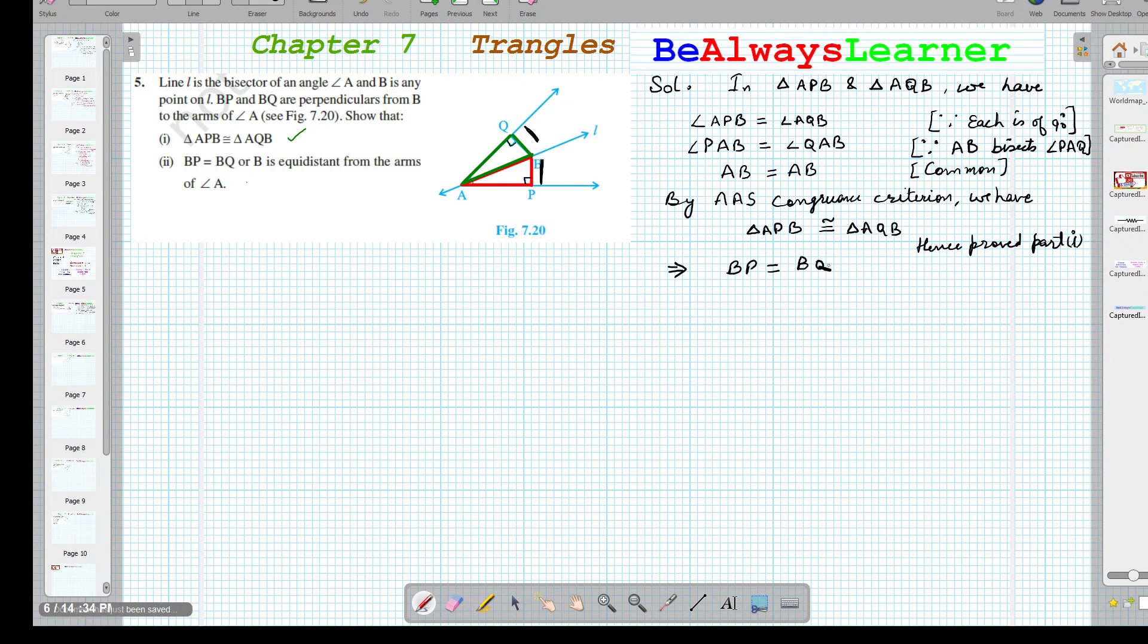This is because corresponding parts of congruent triangles are equal. The corresponding sides are also equal.